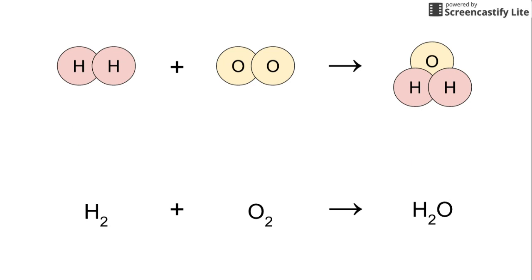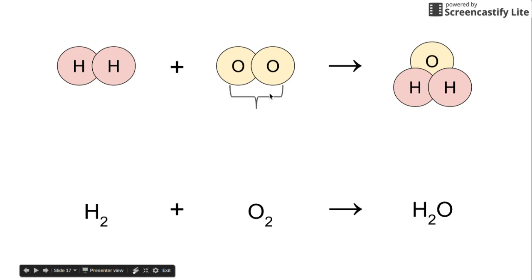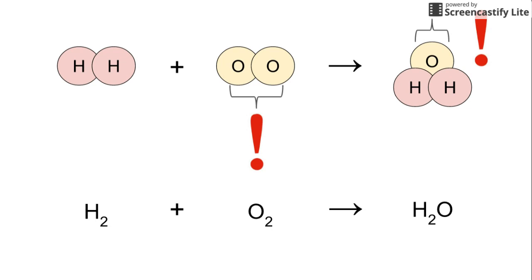Next, let's take a look at the oxygen. We can see that in the diatomic oxygen molecule we've got two oxygen atoms. But if we move over to the product side, we have only one oxygen in this molecule of water. That becomes a problem — this is not balanced, and we now need to fix it.